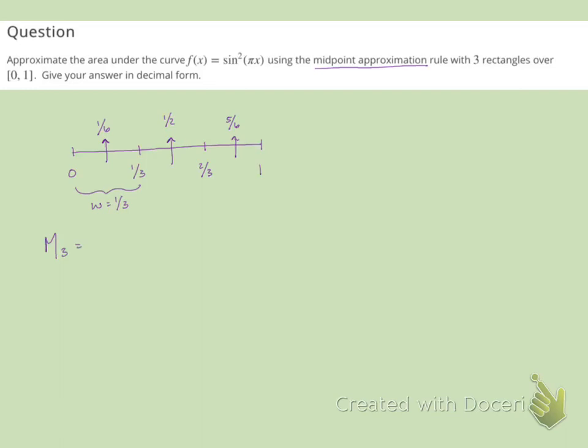So to find this midpoint approximation, the width of the rectangles is 1/3, and then I am approximating at f(1/6) plus f(1/2) plus f(5/6), which will give me...